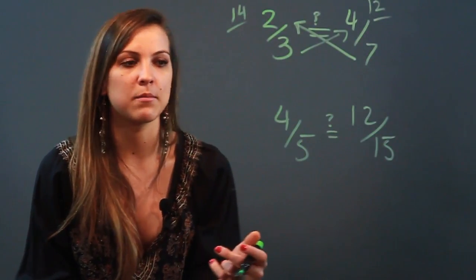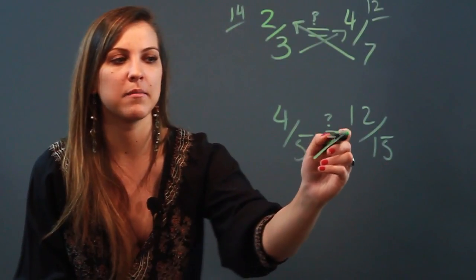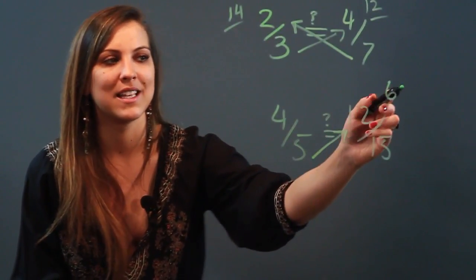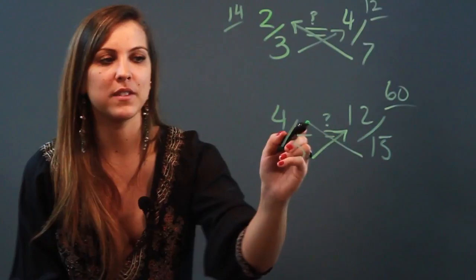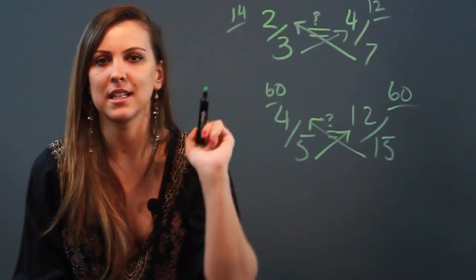Let's try the bottom one. I'm going to cross-multiply again. I have five times twelve, which is equal to sixty, and I have fifteen times four, which is also equal to sixty.